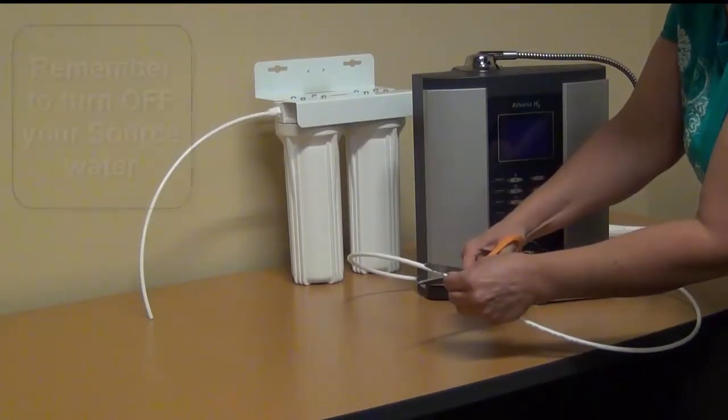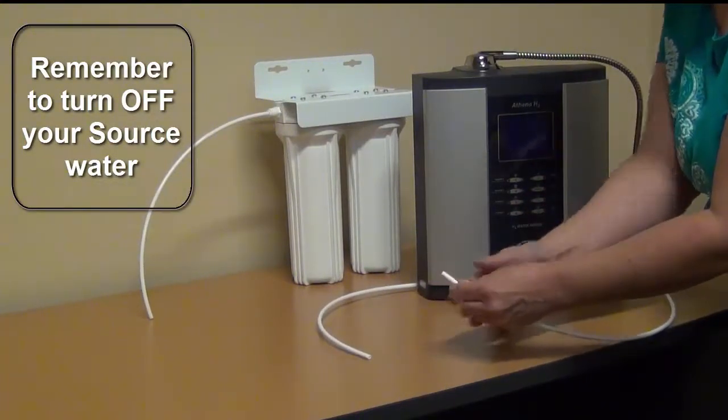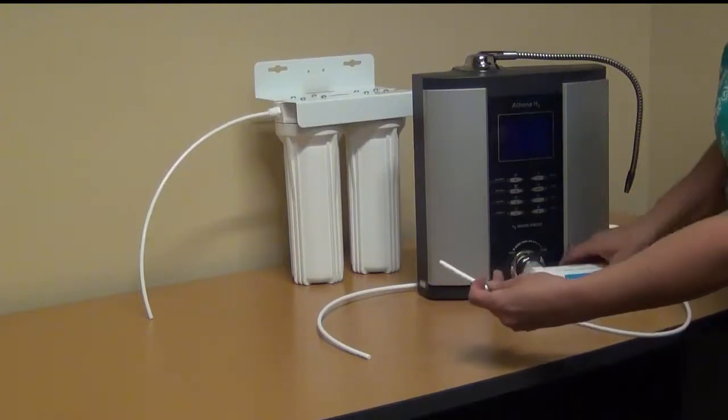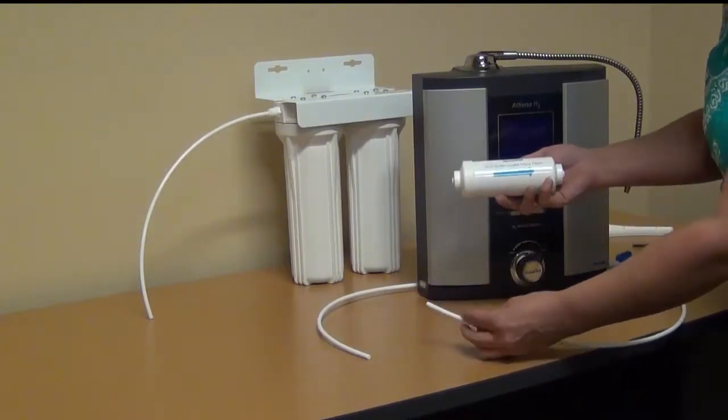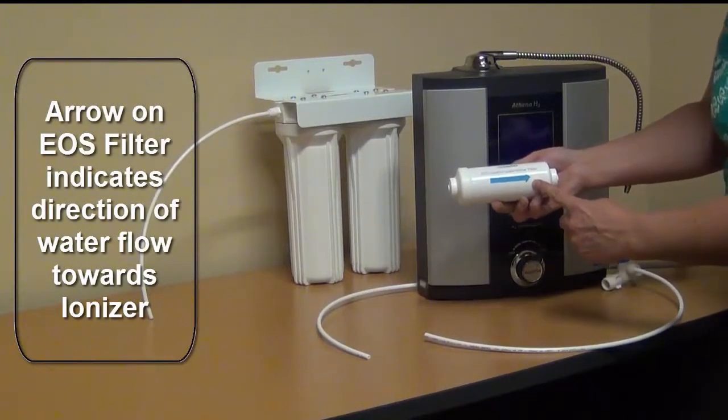Make sure to turn your source water off first, always before installing this. On the Scale Guard filter, there's an arrow which indicates the direction of the water flow.